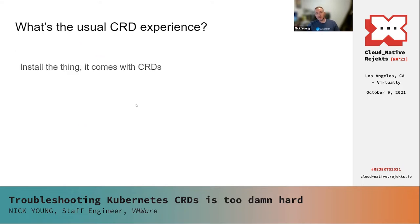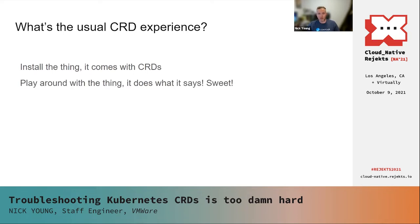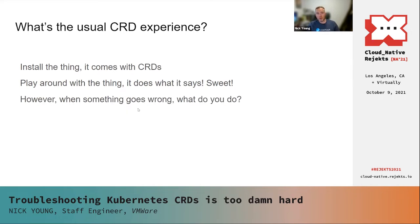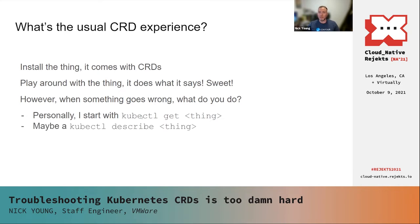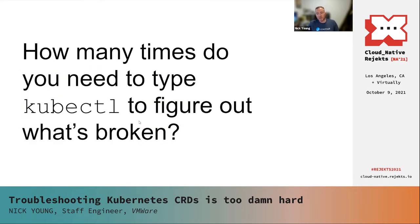You grab the new thing, it comes with CRDs. Awesome. You try it out. Maybe you instantiate one of the CRDs. Everything does what it says. Great. However, what happens if you make a mistake with that CRD? Well, for me usually what I do is go and kubectl get the thing, maybe with -o yaml, to check if there's any useful information in there. Maybe sometimes a kubectl describe as well. But how many times do you need to type kubectl to figure out what's broken? I'm going to show this with my own stuff, without throwing stones at anyone else.